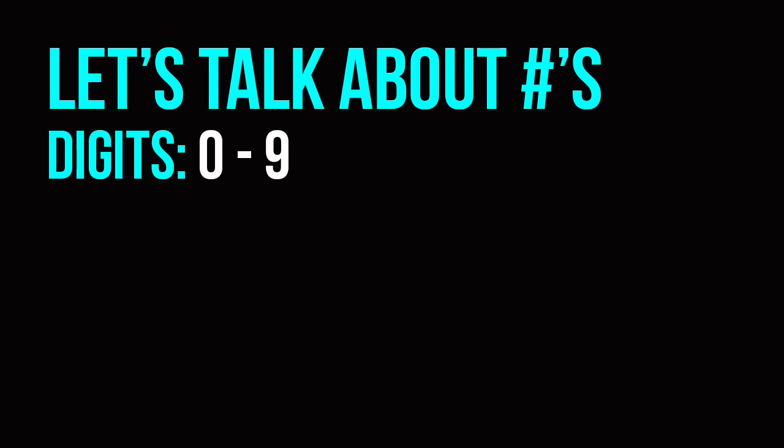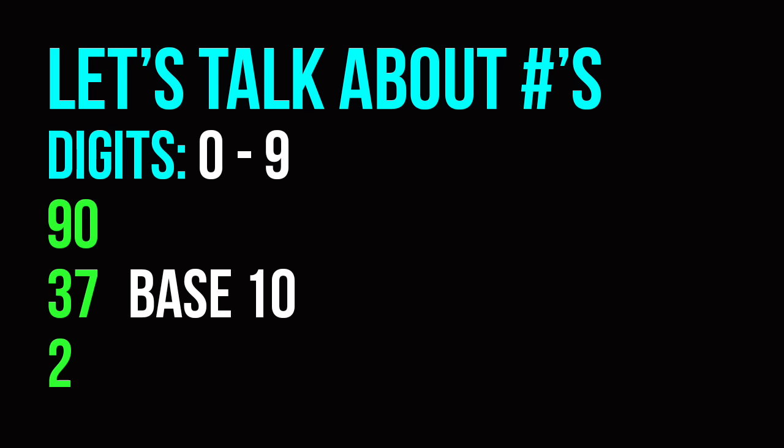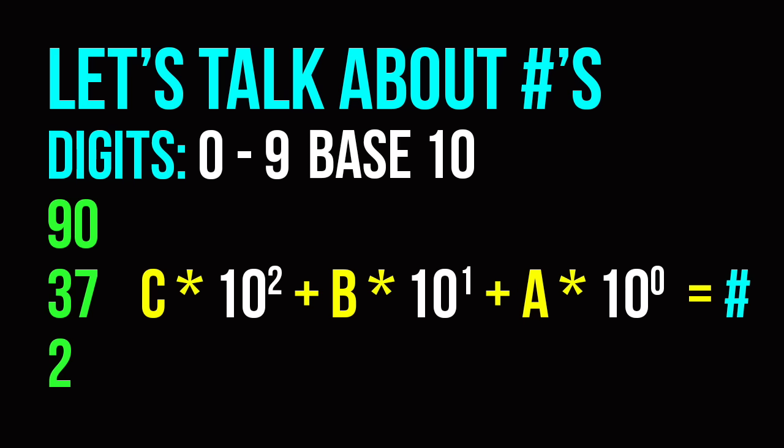What does this have to do with ones and zeros? We'll get there, but first think of how we represent numbers in everyday life. A single digit goes from zero to nine, and all of our numbers — 90, 37, two — they're all in base 10, meaning you have a number times 10 to the zeroth, then a number times 10 to the first, then a number times 10 to the second, then you add them all together, and that's how you get your final number.